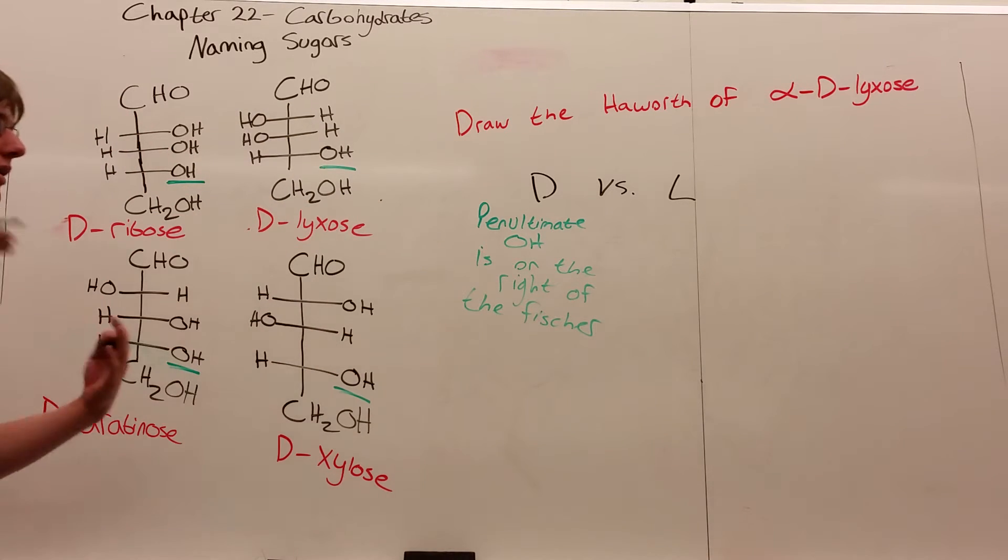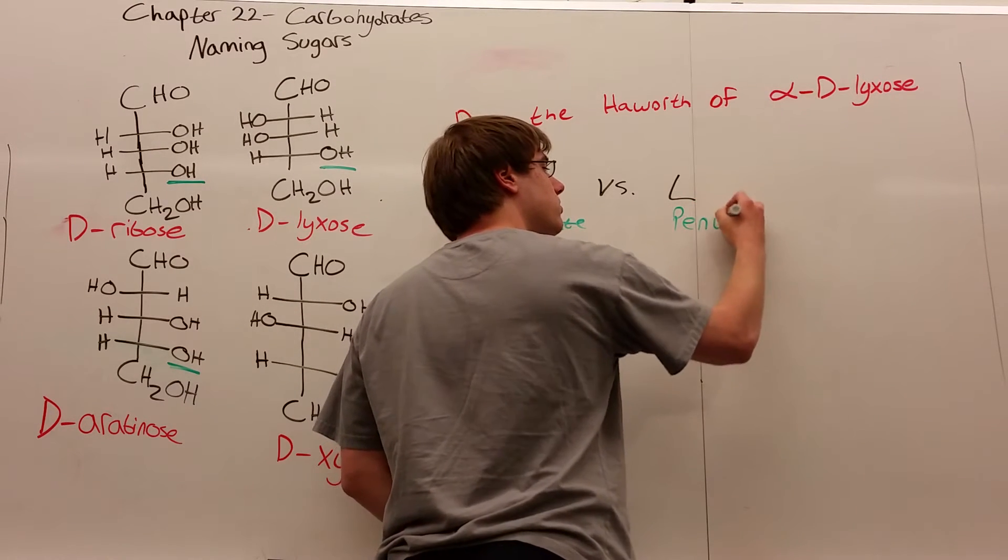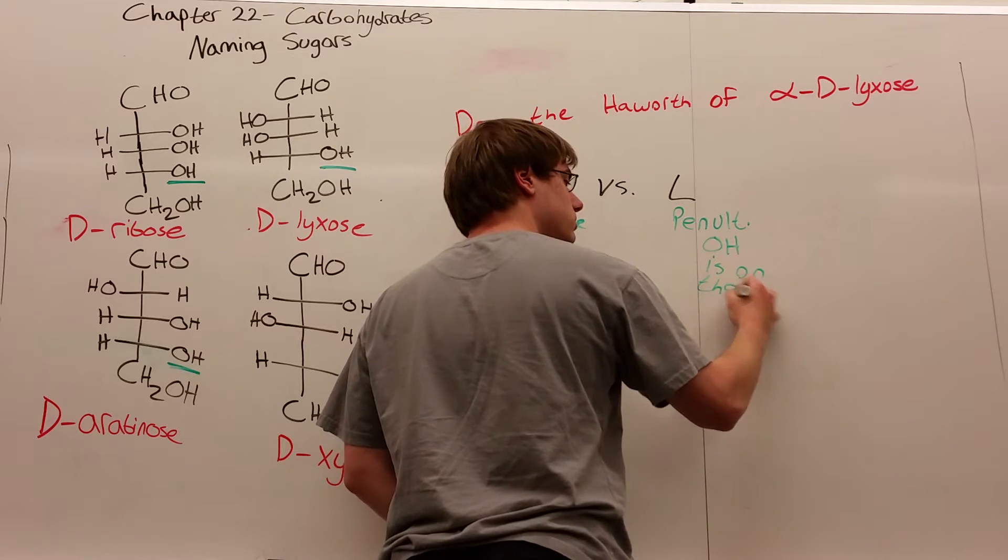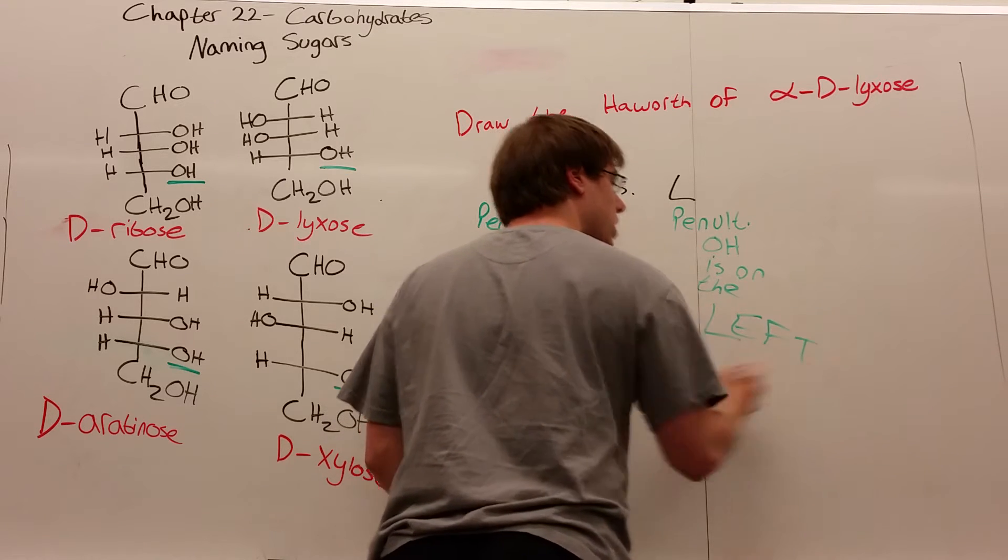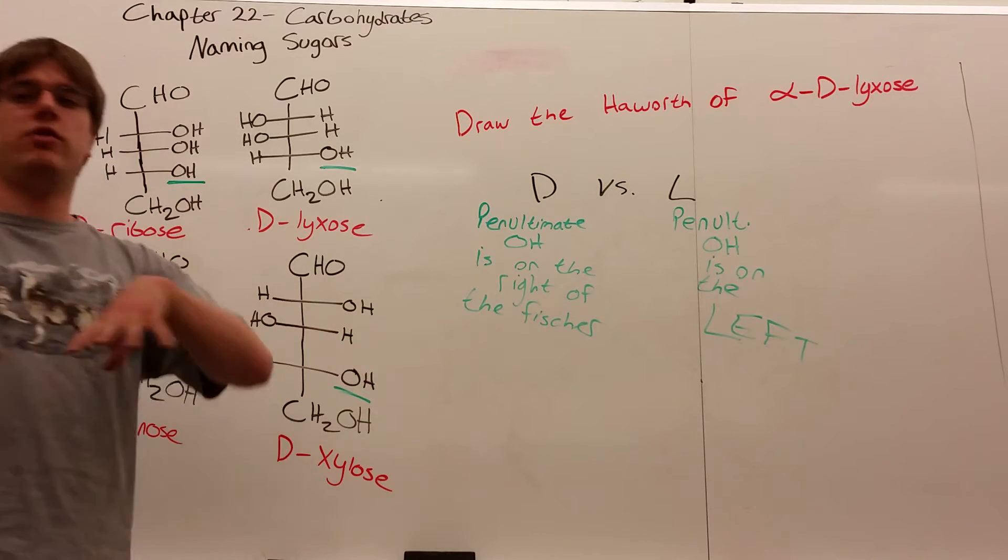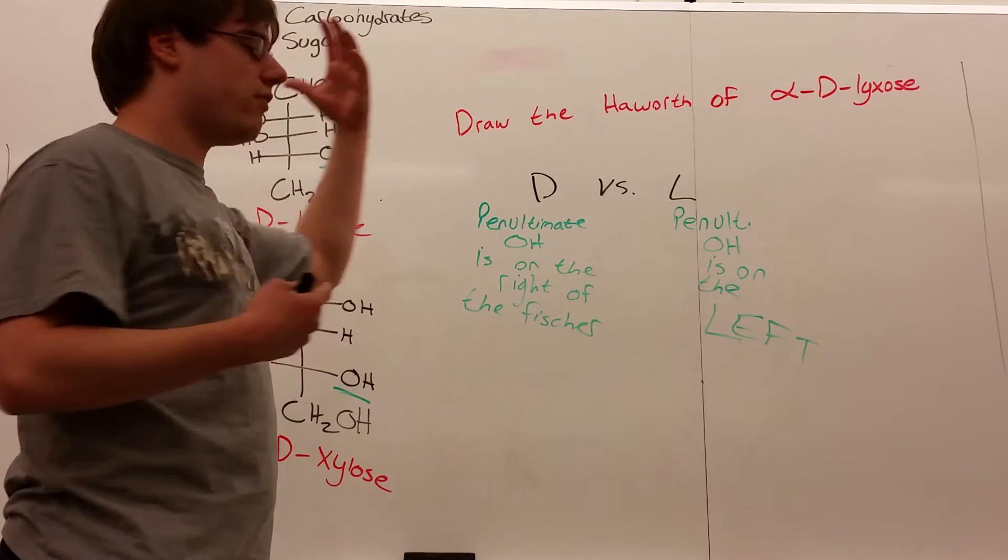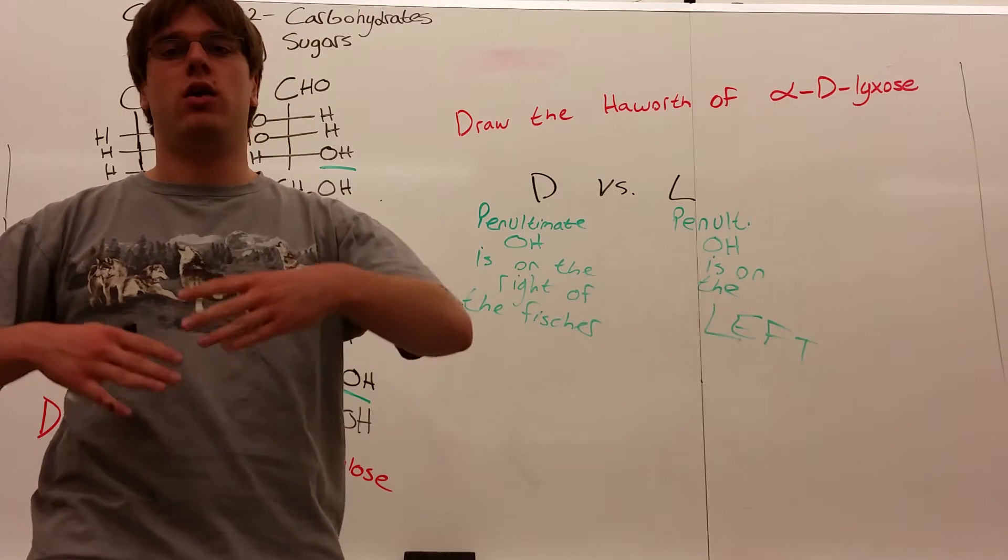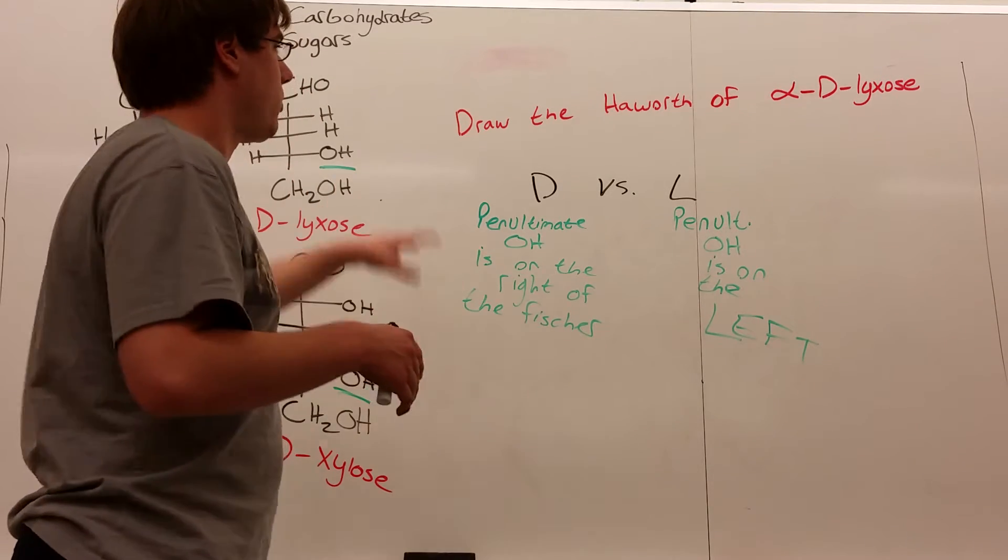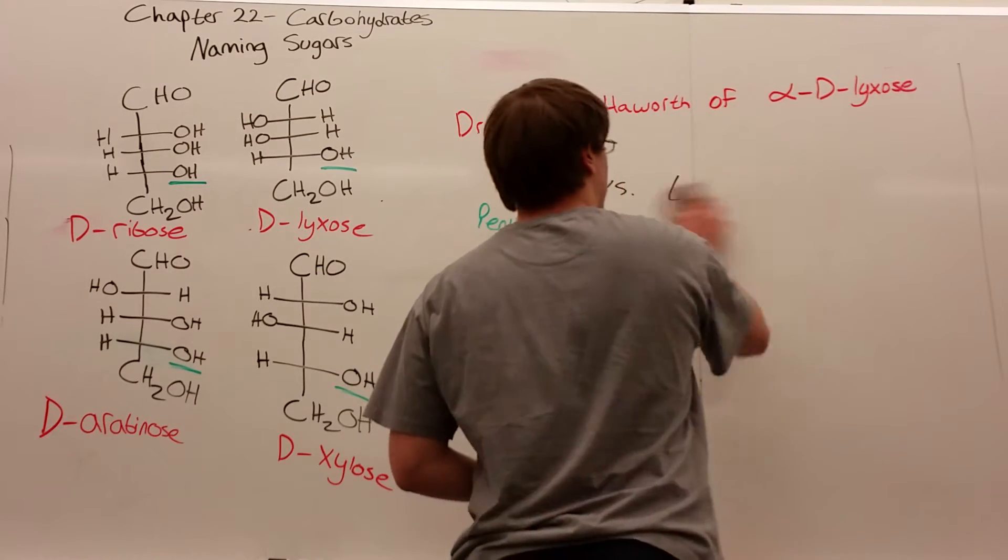By extension, that means for L sugars, the penultimate OH is on the left. You can also tell D versus L when we have Haworth projections, because we have that special rule for the penultimate OH. I'll illustrate that better once we actually draw a Haworth.